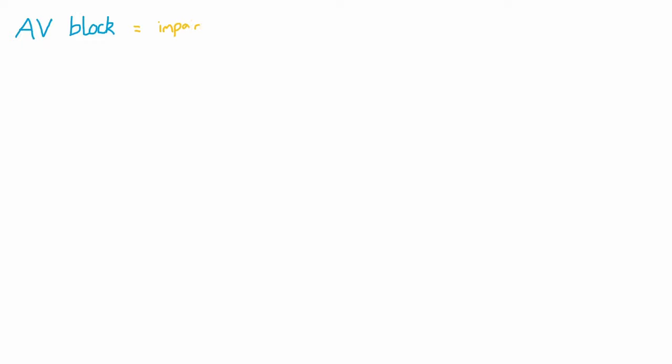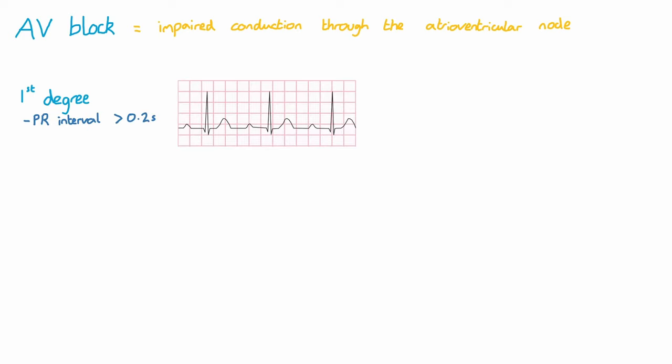AV blocks can also result in bradycardia. The term AV block is used synonymously with heart block. It's a result of impaired conduction through the atrioventricular node. First degree AV block means the PR interval is over 0.2 seconds, or 5 small squares. The increased PR interval represents a delay in conduction from the atria to the ventricles. If the patient is haemodynamically stable and asymptomatic, then this is often an incidental finding with no treatment required.